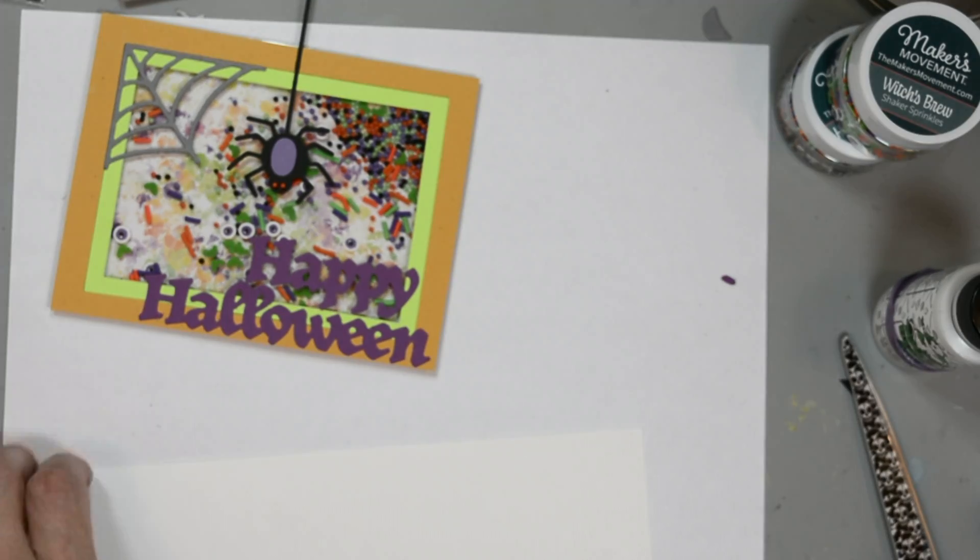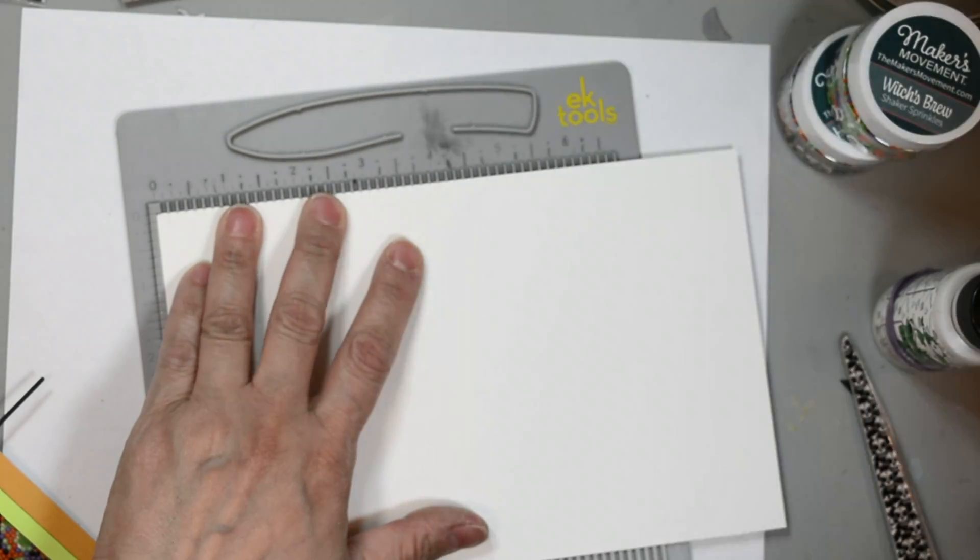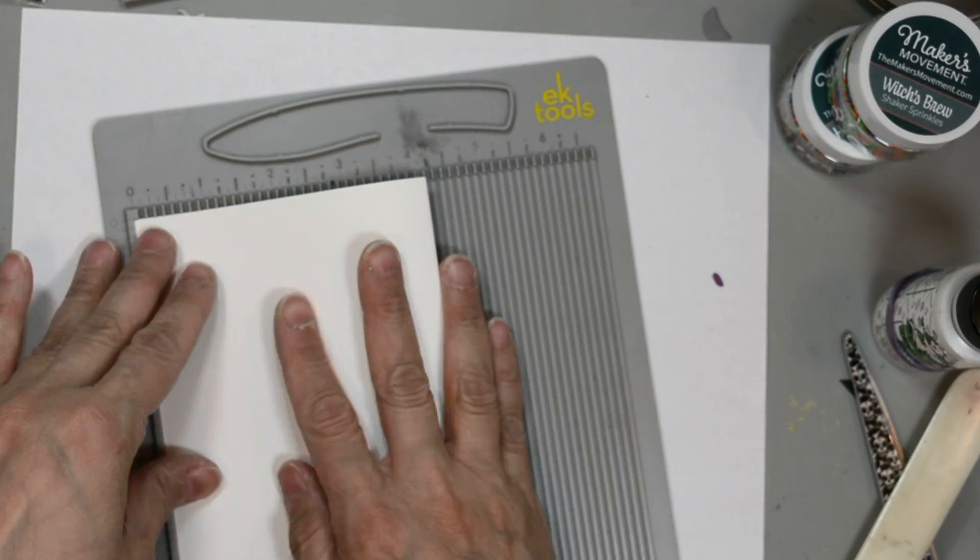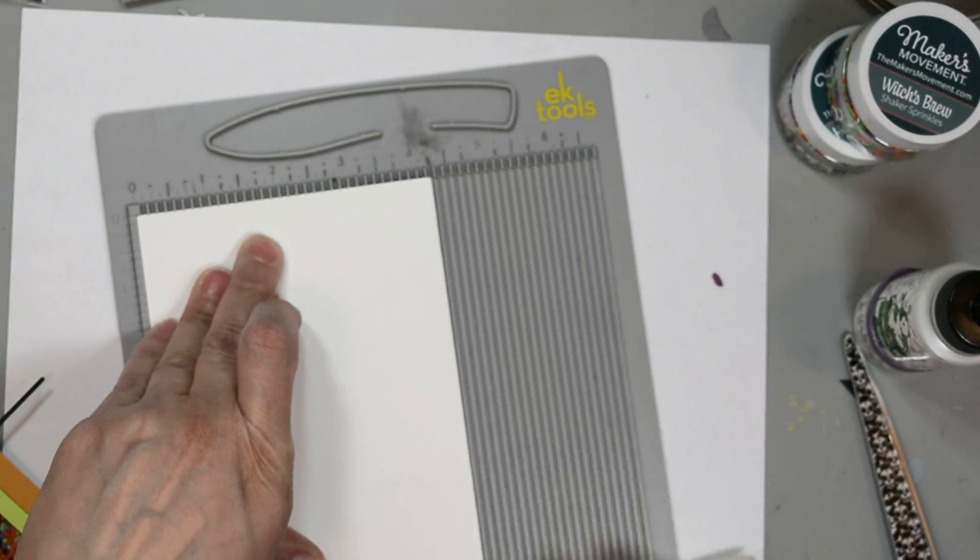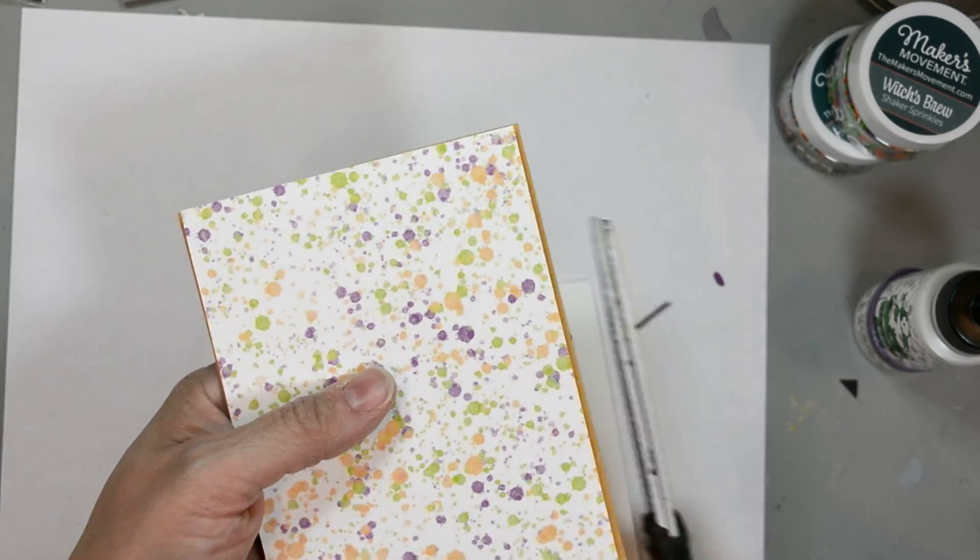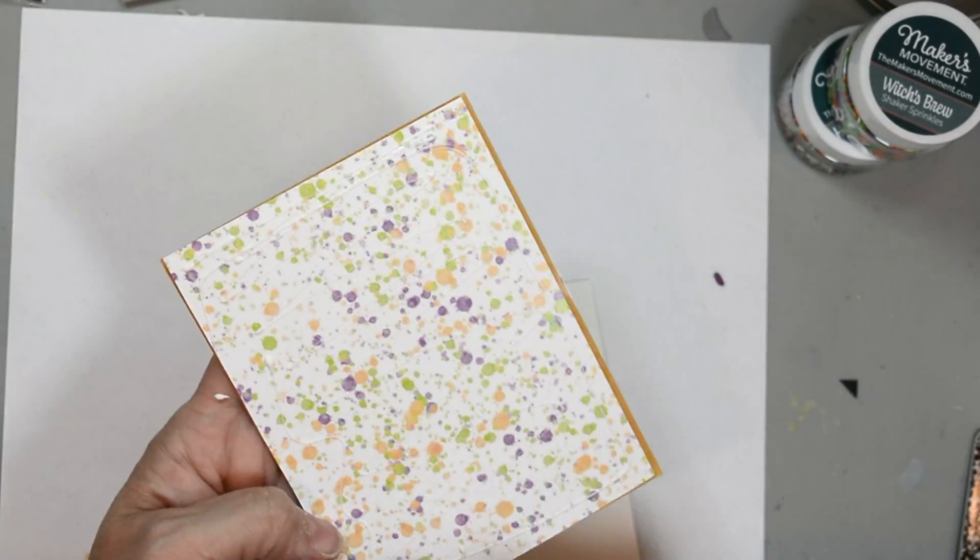I'm going to go ahead and fold my card base. I forgot to do that ahead of time. I usually do that ahead of time. So this is an eight and a half by five and a half card piece here. And I'm going to score it at four and a quarter to create our card base.